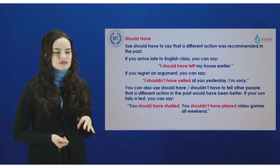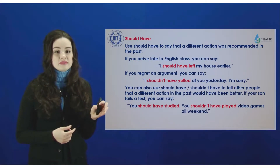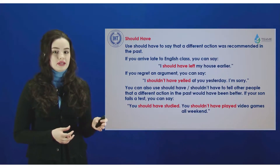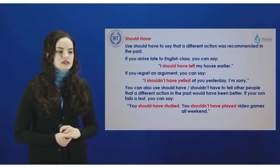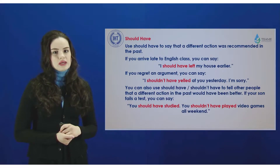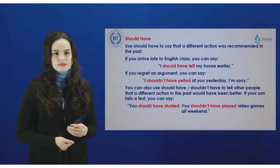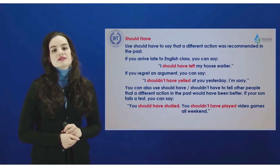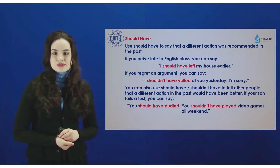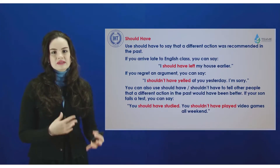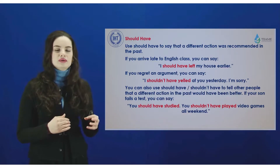Should have may also be used with a verb after it — verb three in past participle form. Such a structure may be expressed when you mention some condition. This structure is used in the third type of conditional sentences, in the main clause, when you would like to express why something didn't happen or how a situation could have developed.